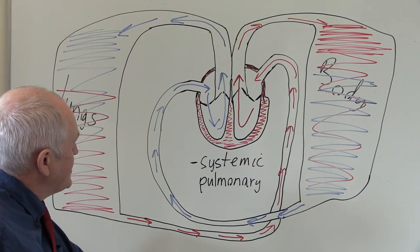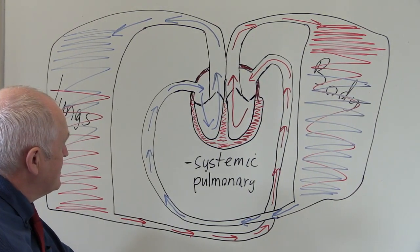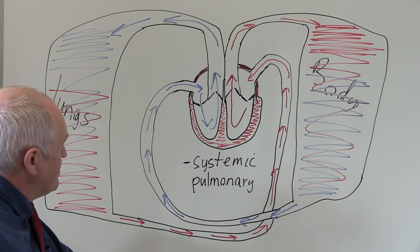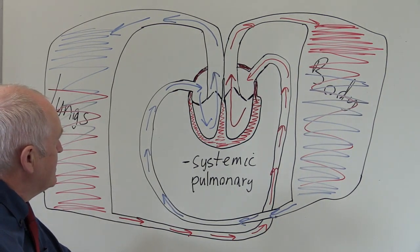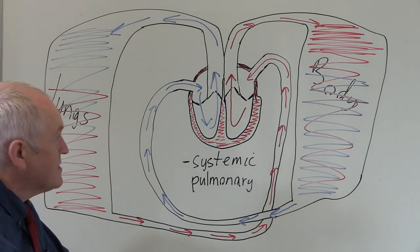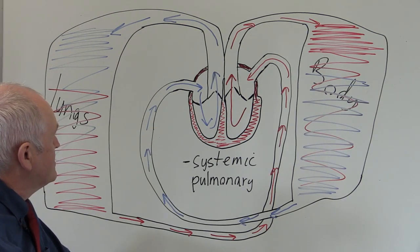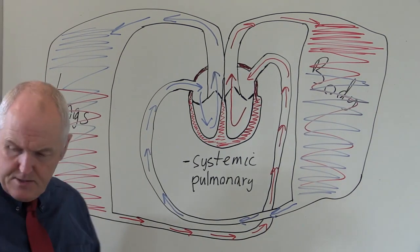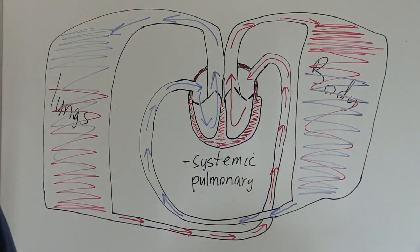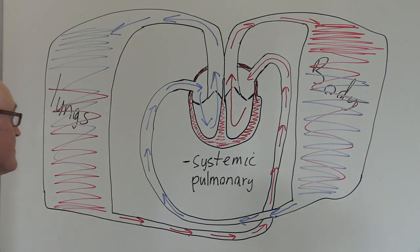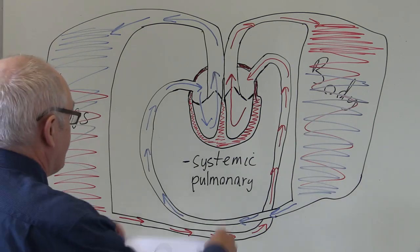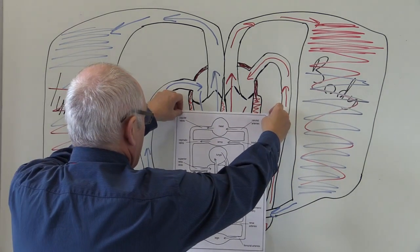So the circulation of the blood in essence is very simple and very straightforward, and yet a very intricate, well-designed, parsimonious system of circulation. Now I've got a diagram here which shows us a bit more detail on how this circulation of the blood works.